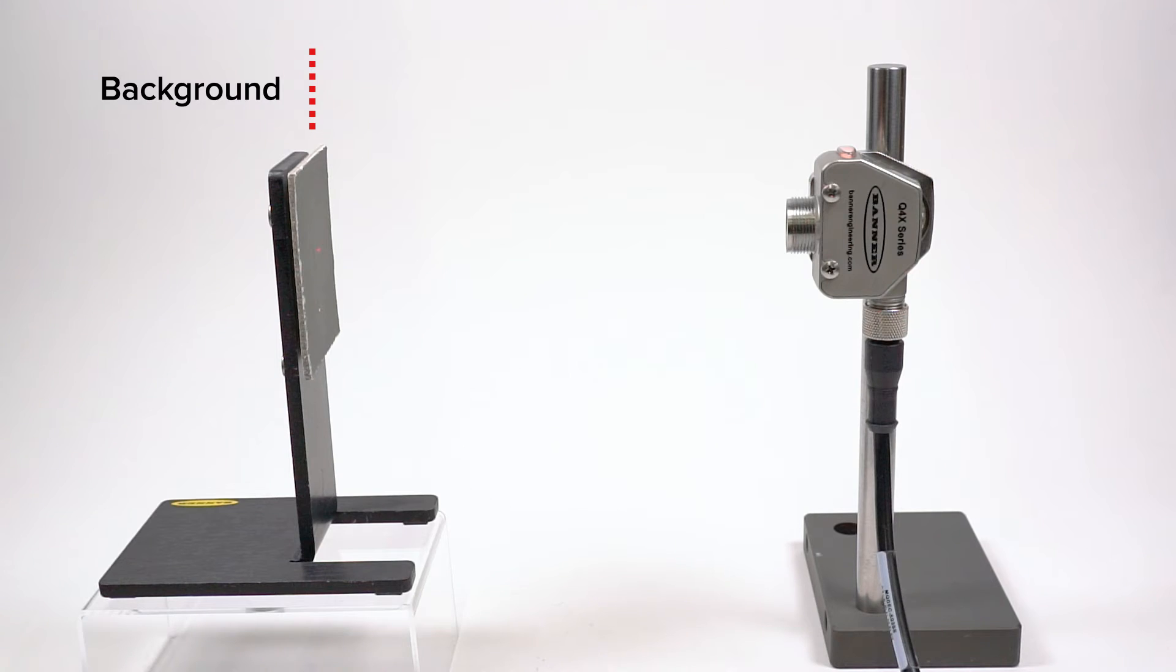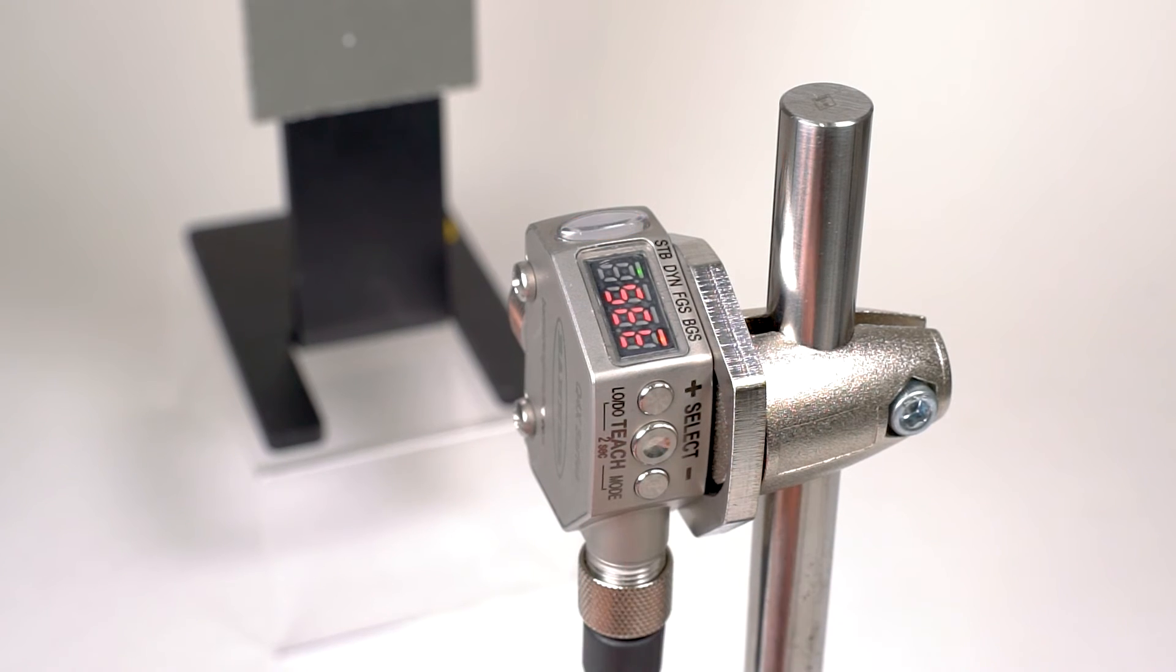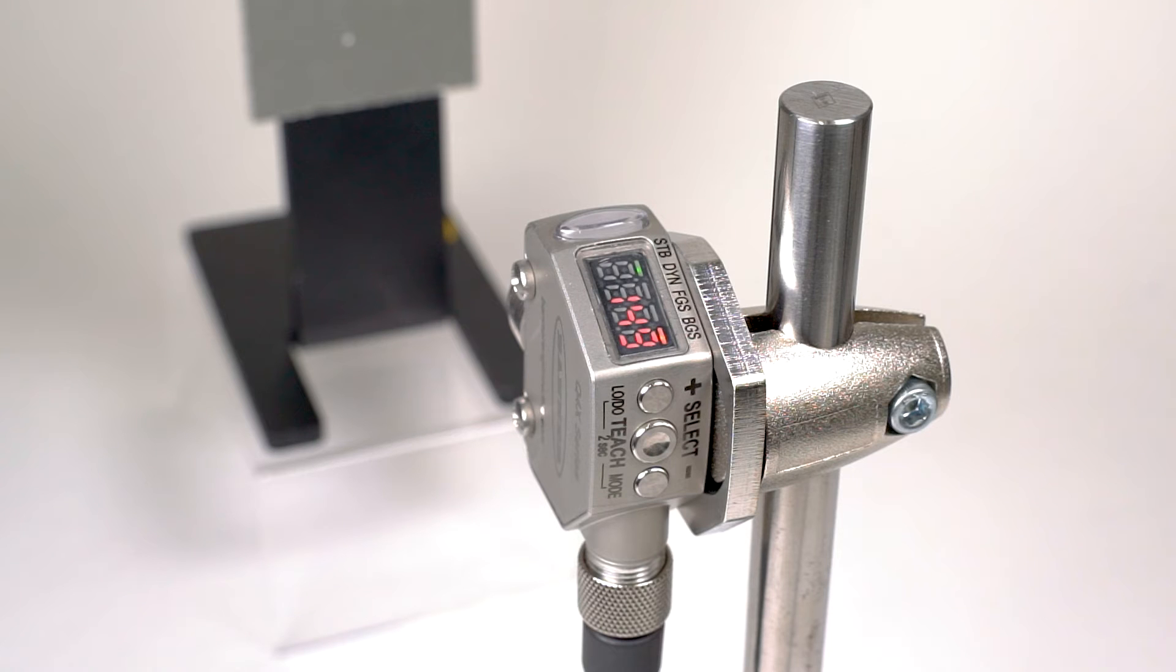Present a target that will represent the background to be ignored and press the teach button again. The display will flash with a number indicating the distance of the switch point and then return to run mode.